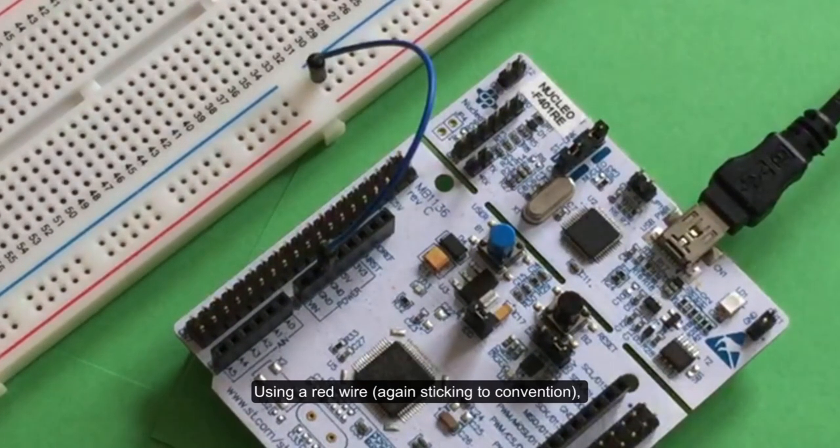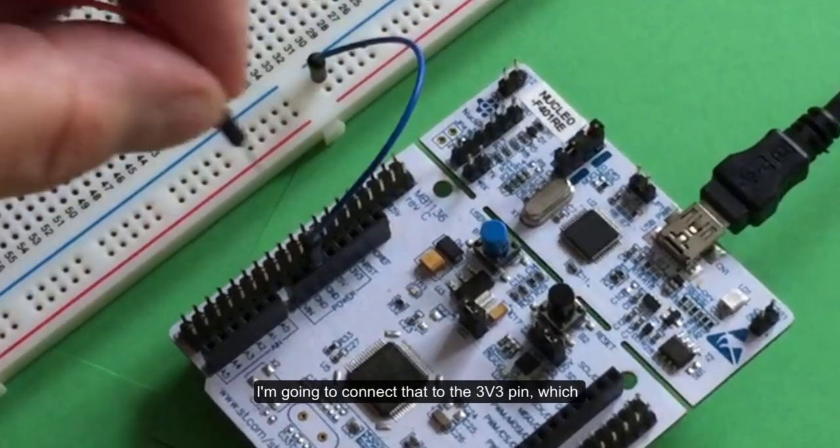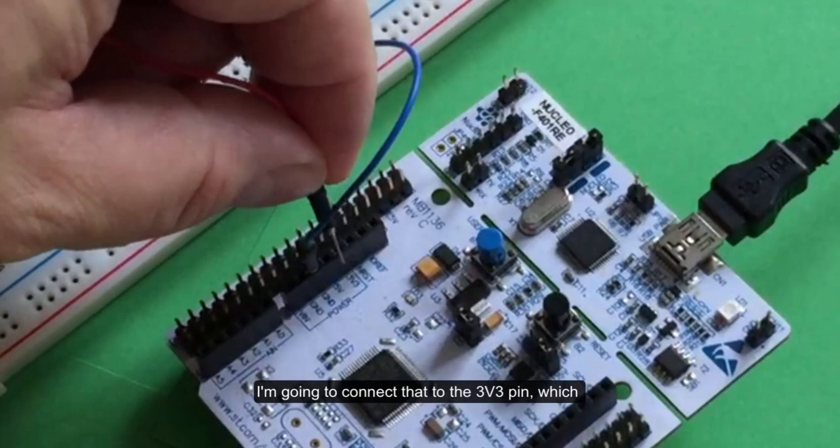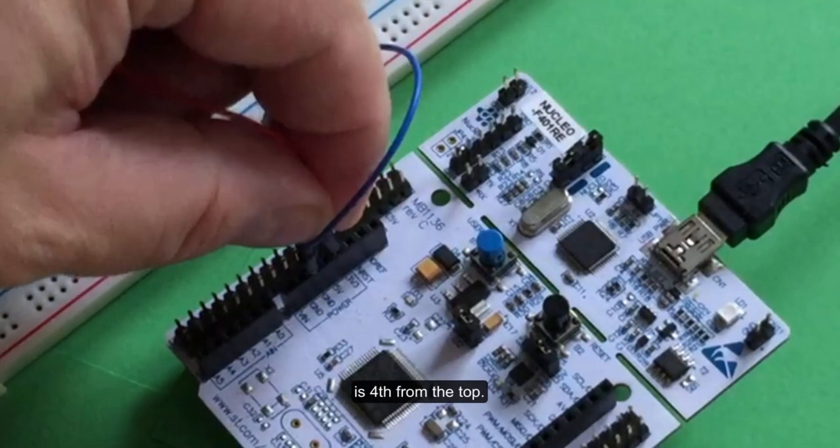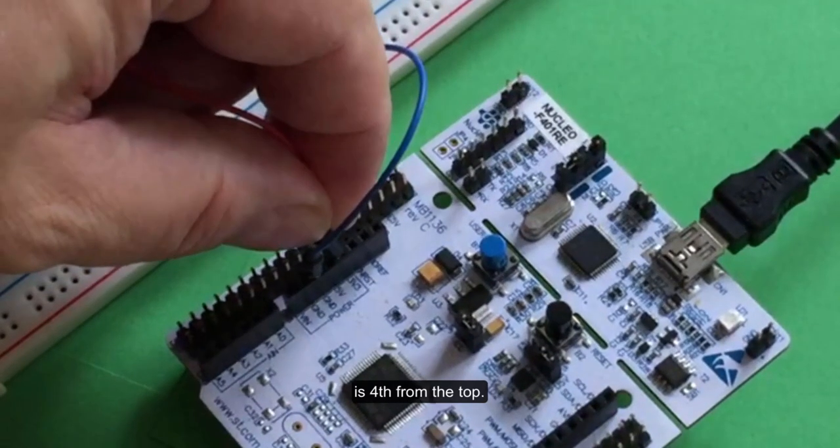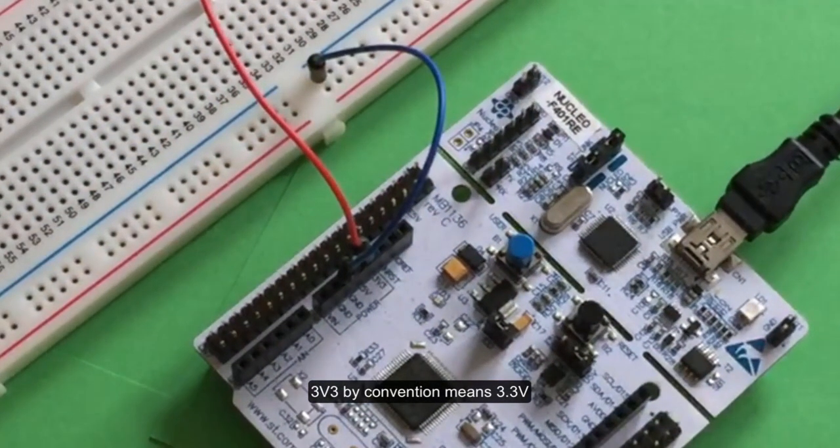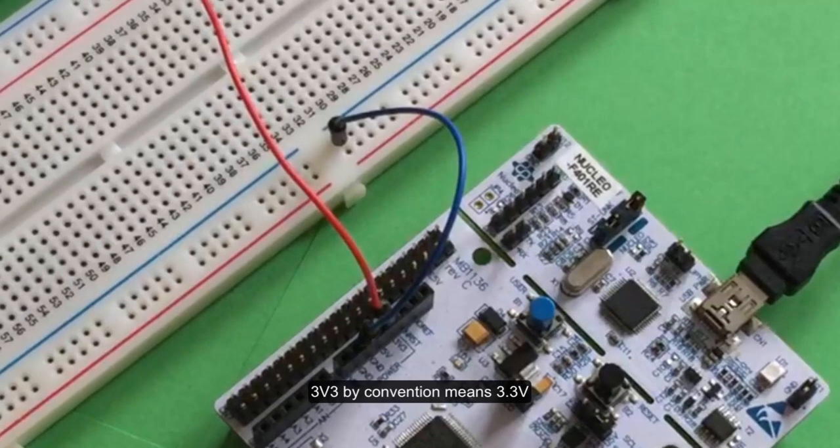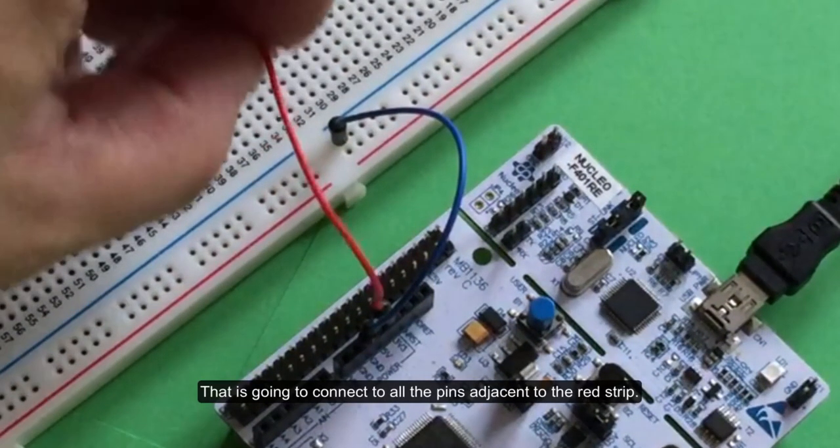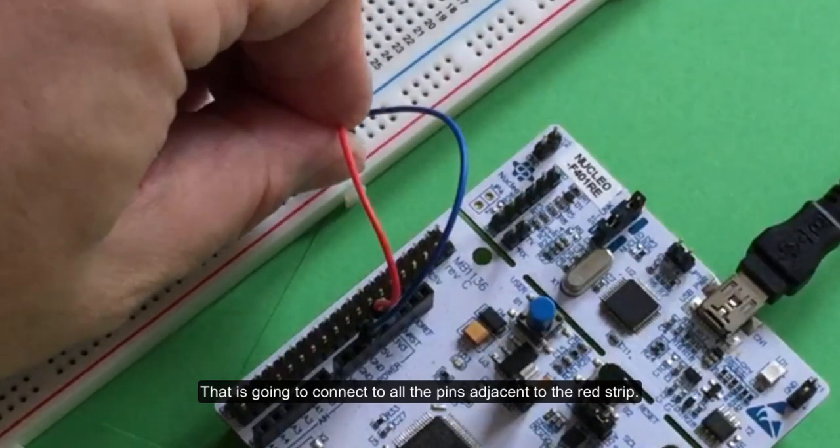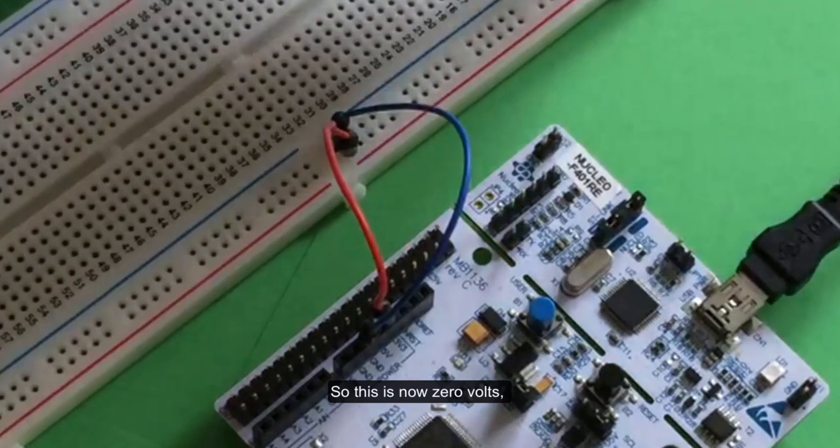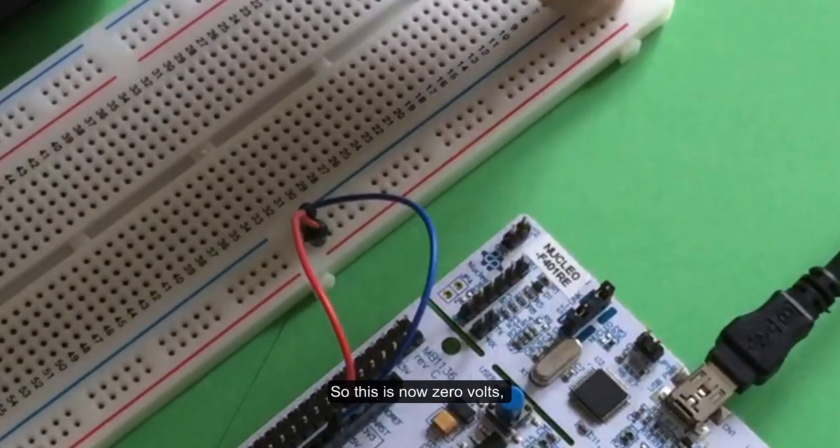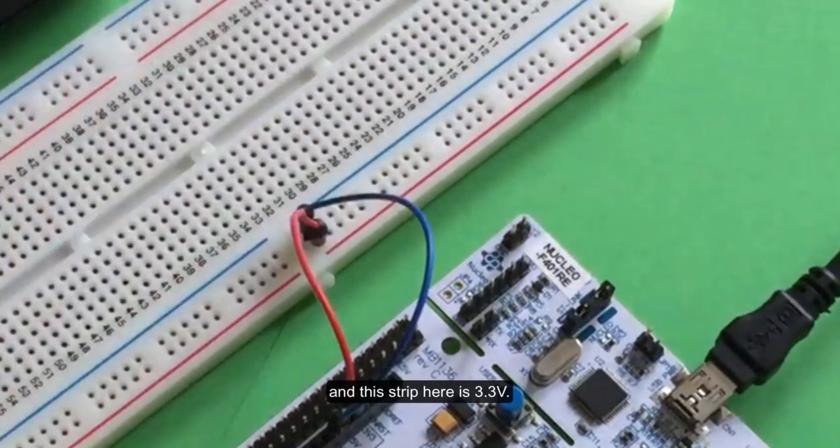Now using a red wire, sticking to convention, I'm going to use the 3V3 pin which is four from the top. 3V3 by convention means 3.3 volts and that's going to connect to all the pins adjacent to the red strip. So this is now zero volts and this strip here is 3.3 volts.